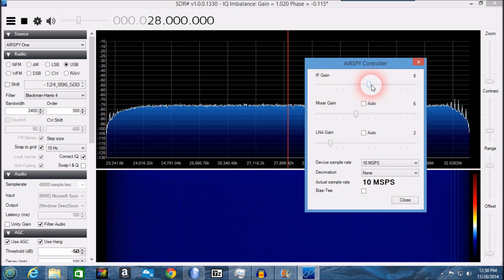the noise level will start to rise. The proper setting for the IF gain slider is right at the point where the noise floor starts to go up.